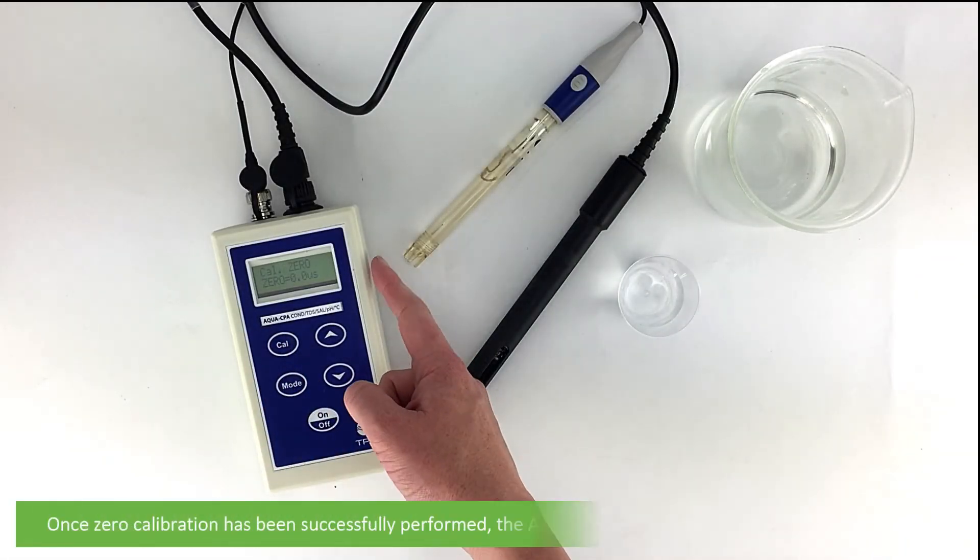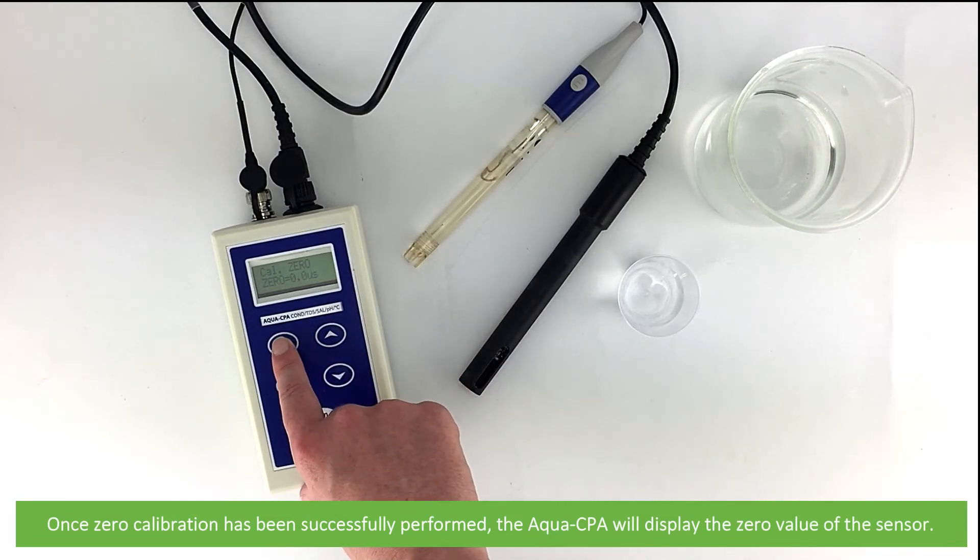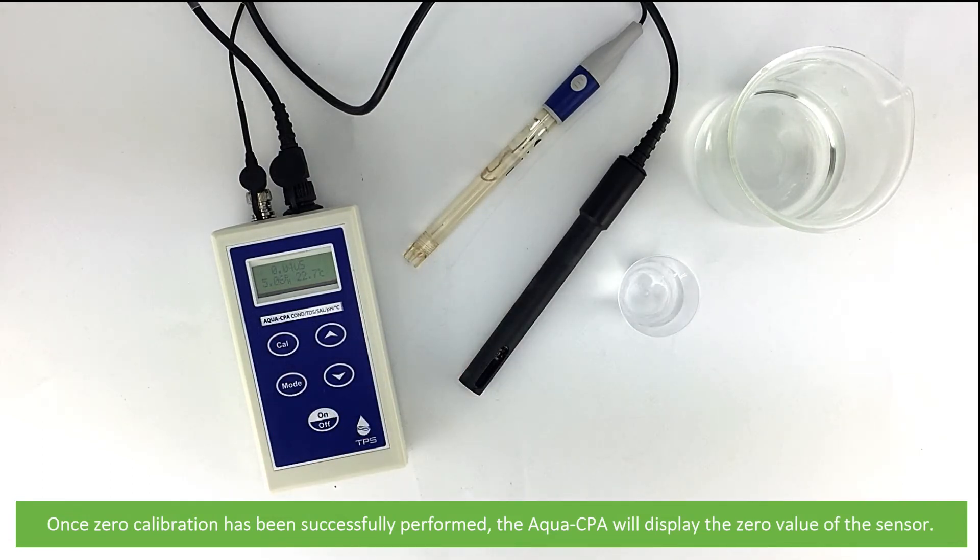When the reading is stabilized at or near zero, press the CAL key. Once zero calibration is successfully performed, the Aqua CPA will display the zero value of the sensor.